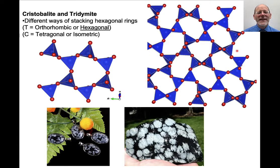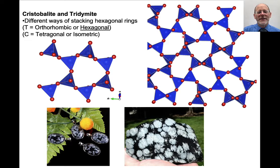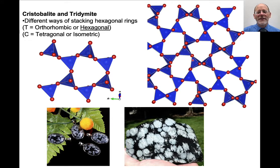Cristobalite and tridymite are simply different ways of stacking hexagonal rings and they have different symmetries — either orthorhombic, hexagonal, tetragonal, or isometric. Basically, here are some sheets of silica tetrahedra linked in rings, and the question is simply whether they have an up-down, up-down distribution of silica tetrahedra, or a more complicated arrangement with a series of up-facing and down-facing tetrahedra arranged differently.